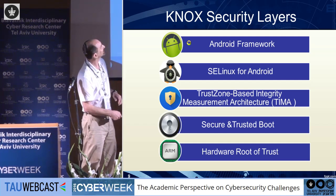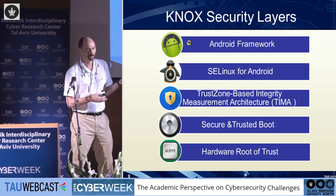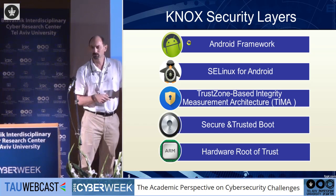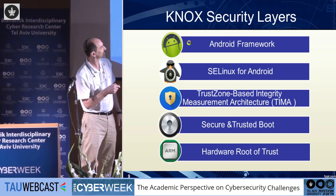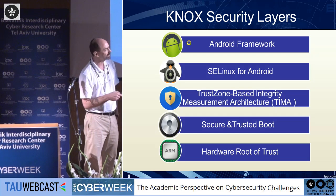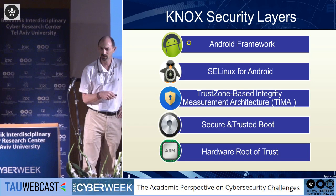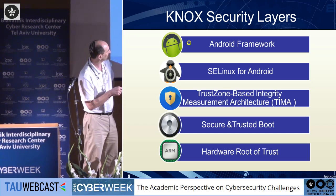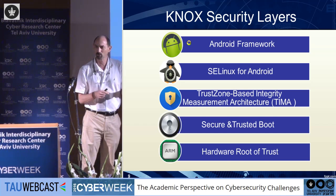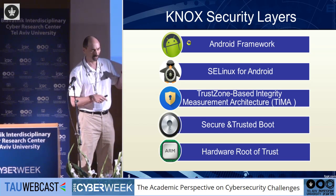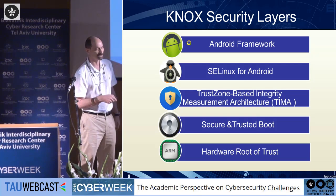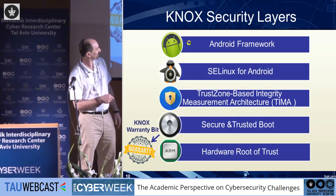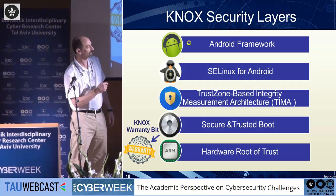We can look at the various security layers in Samsung phones, going from software level all the way down to hardware. At the top is the Android framework using SELinux for Android — a common security component. Under that is Knox-specific stuff: a thing called TrustZone-based Integrity Measurement Architecture, or TIMA. Then there's the secure and trusted boot — when you power up the phone, it goes through specific steps to identify if you've done anything strange to it. At the bottom is the hardware root of trust provided by ARM as the CPU vendor. I'd like to draw attention to the Knox warranty bit within the secure and trusted boot layer.